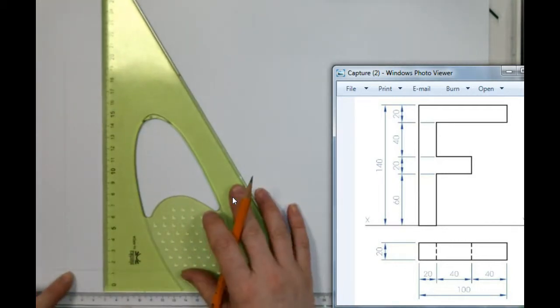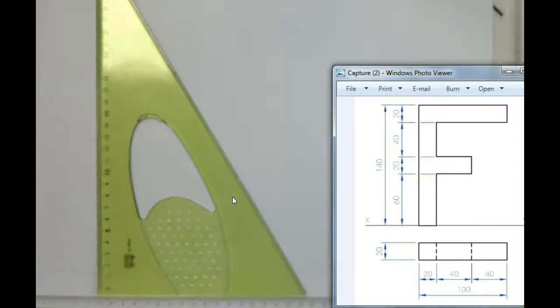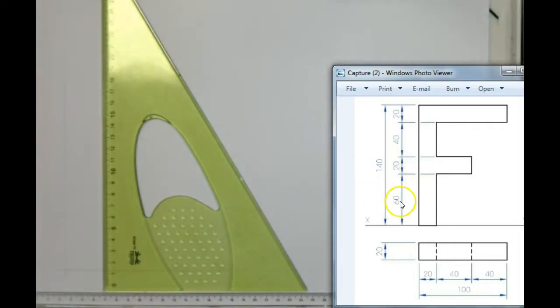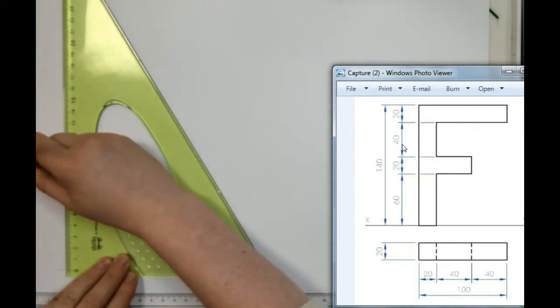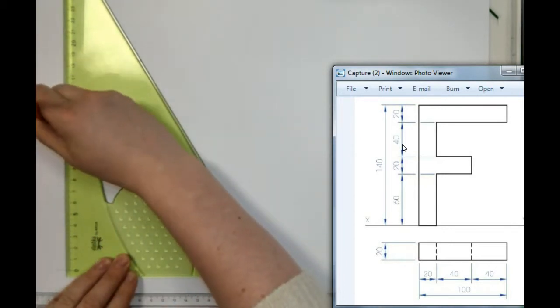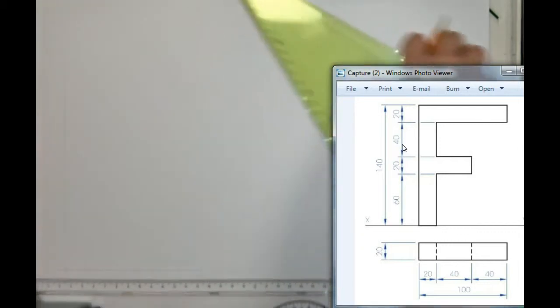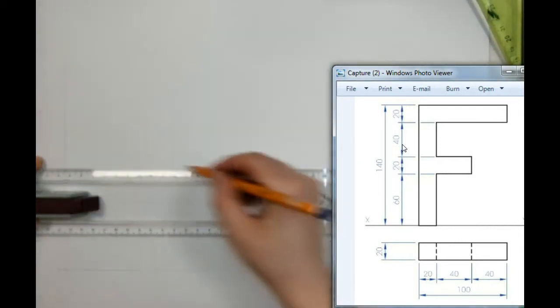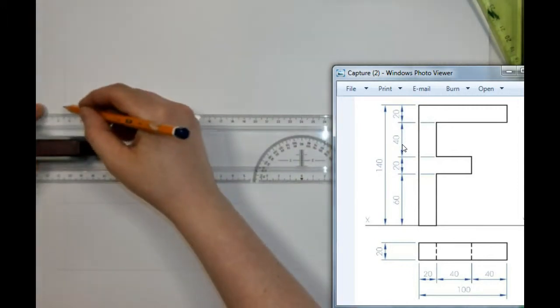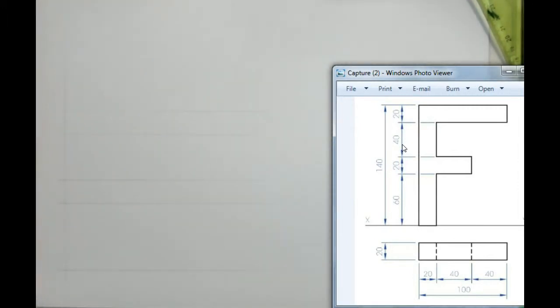And at the point where they meet there, I'm going to measure the height. So I have a height here of 60, 20, 40 and 20. And from each of those points, we're going to draw a horizontal line across. So we've drawn all those horizontal lines.